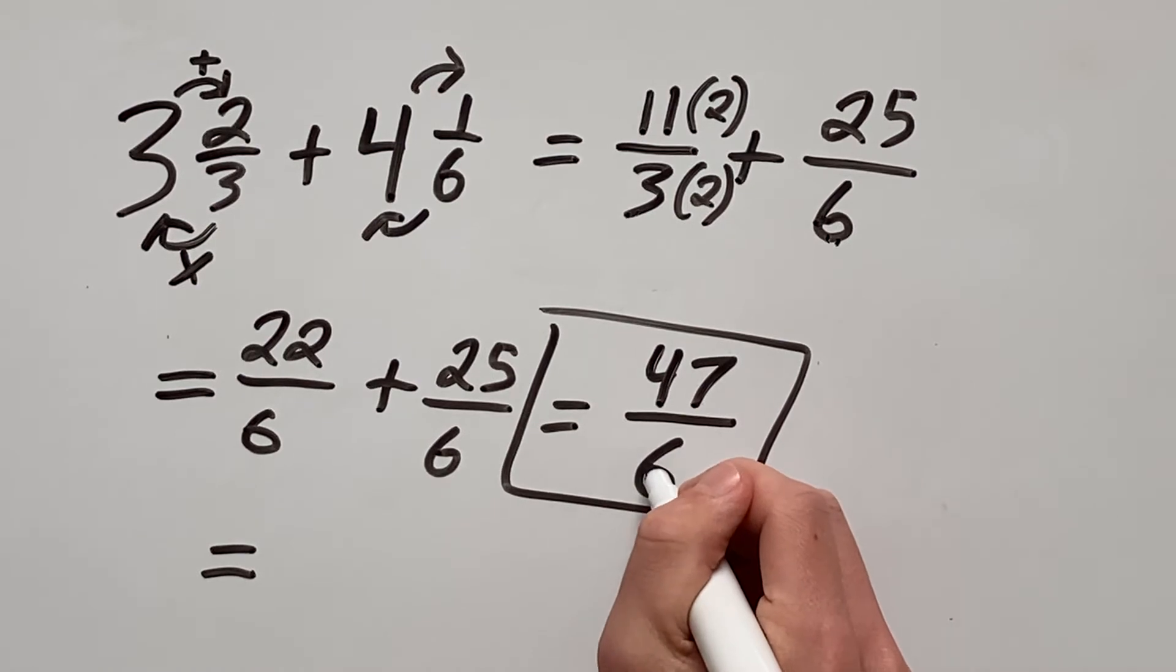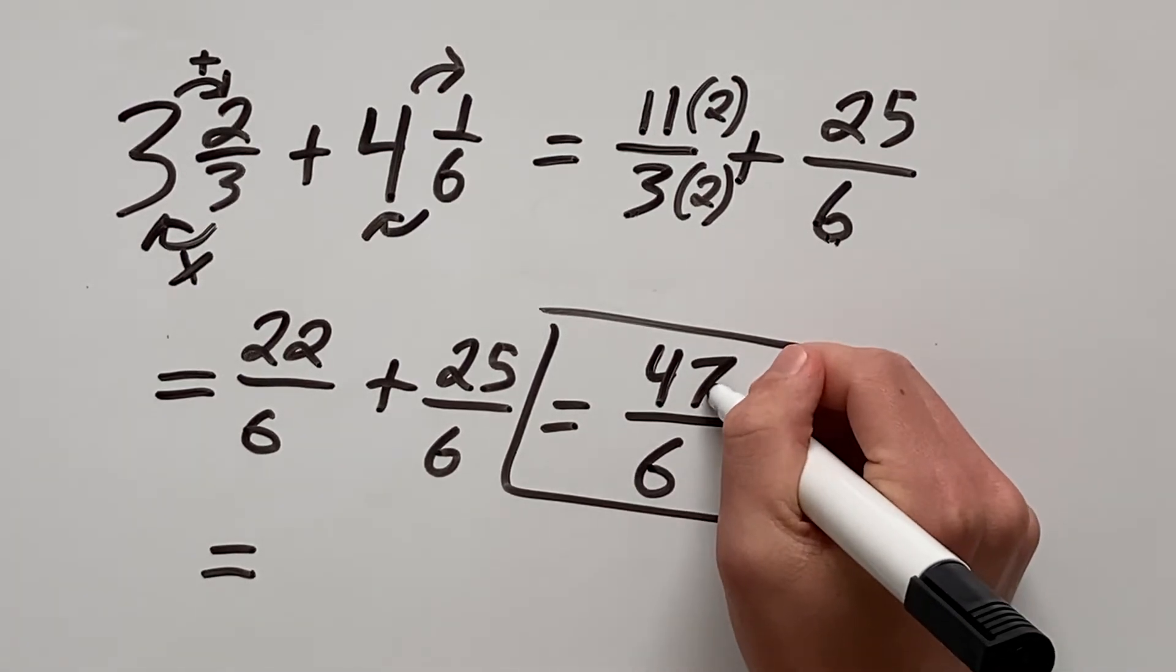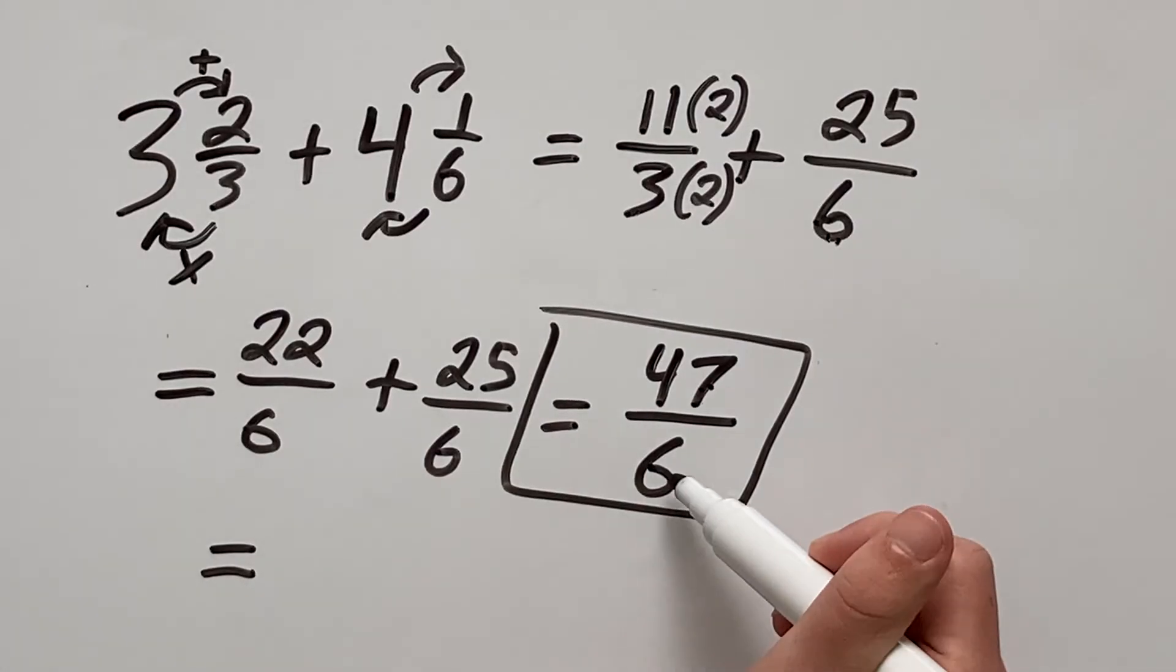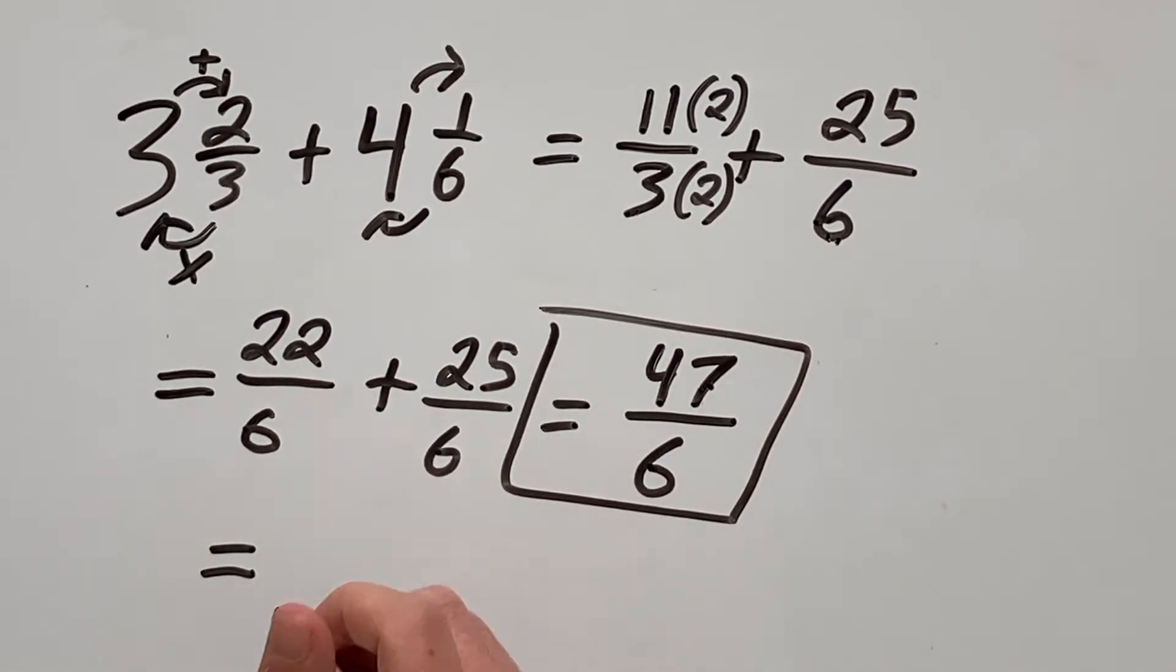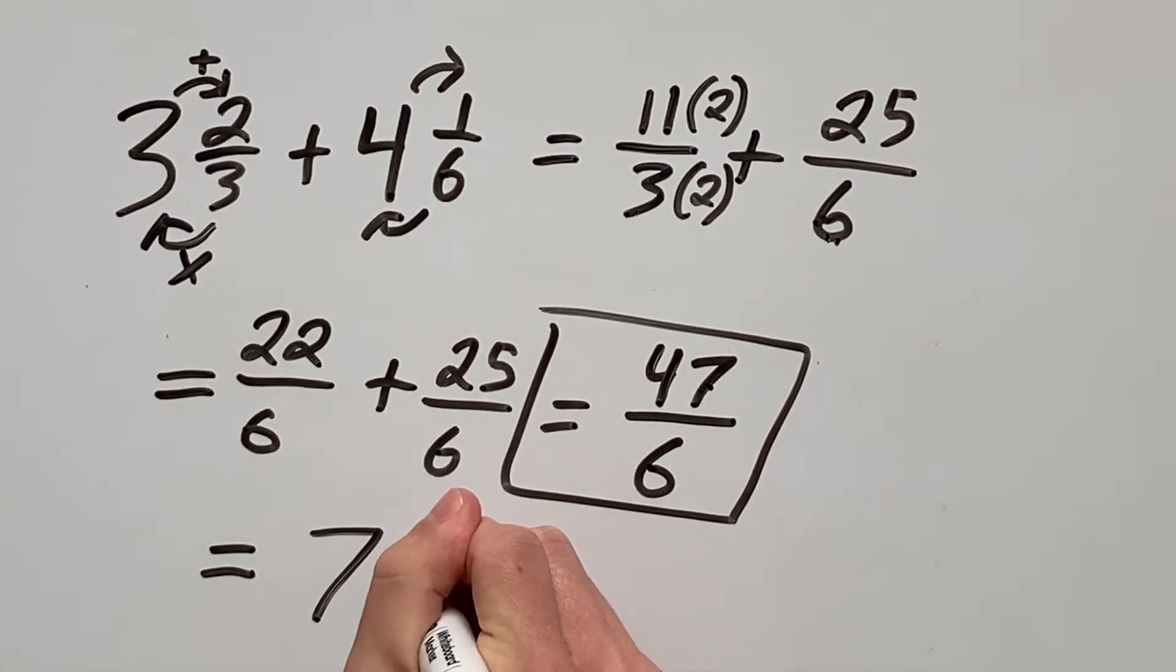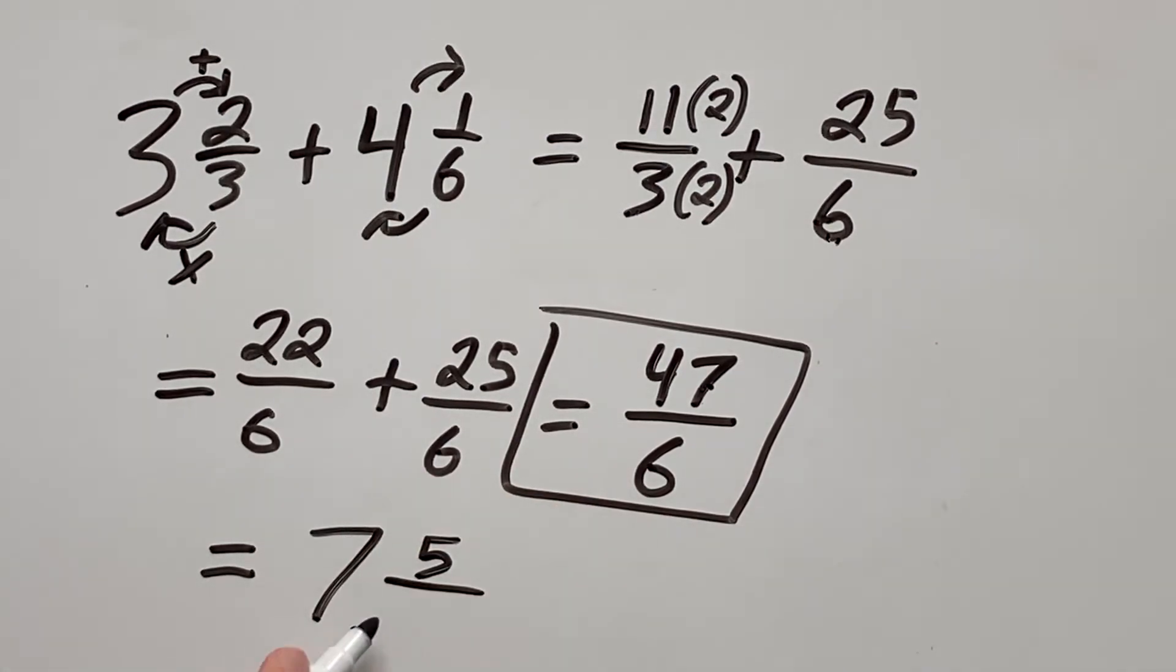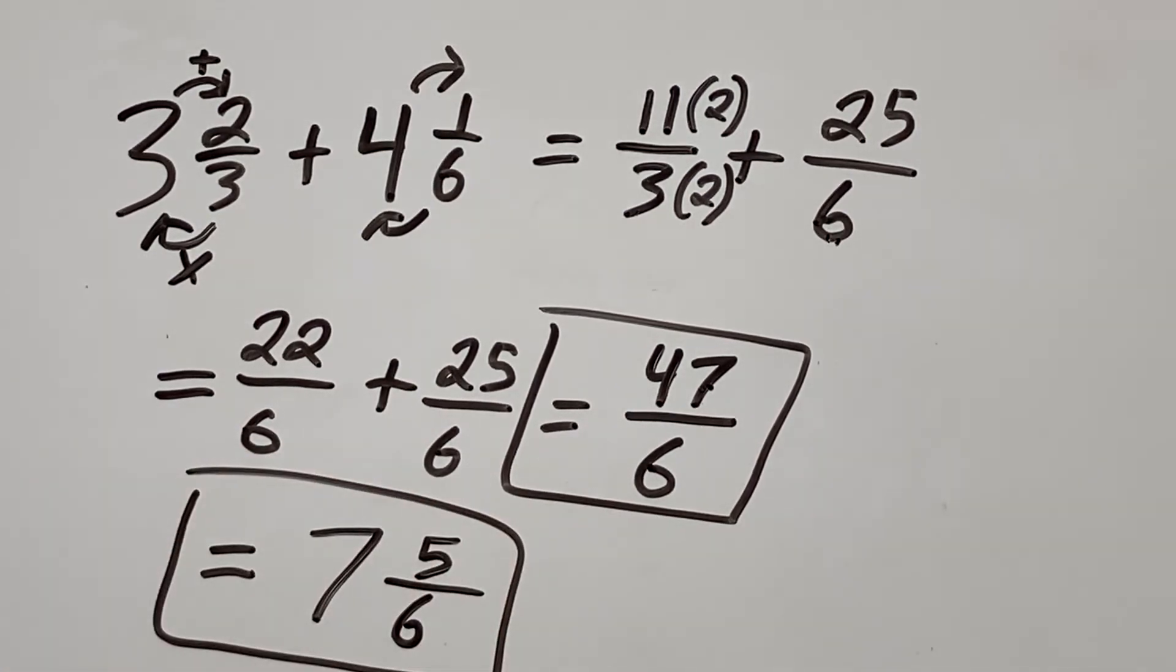To do that, think how many times 6 goes into 47. So 6 goes into 47, 7 times as 6 times 7 is 42 and that has a remainder of 5. So you write 7 and 5 and the denominator will stay as 6. So our final answer written as a mixed number is 7 and 5/6.